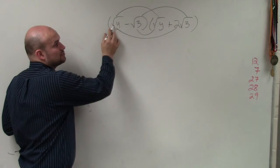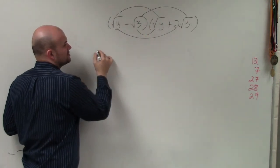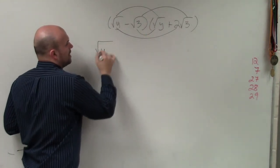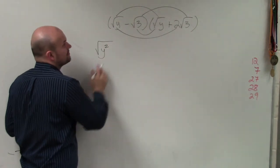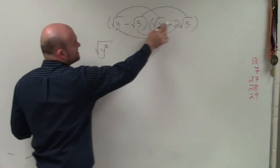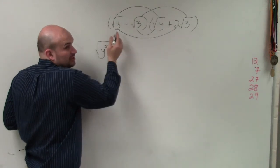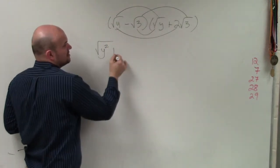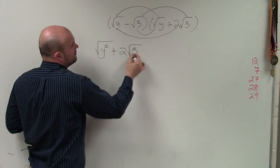Square root of y times square root of y is going to be the square root of y squared. I'll just do this basically. Square root of y times 2 square root of 3 is going to be, remember, when you're multiplying, you can just multiply the numbers. So that becomes 2 square root of 3y.